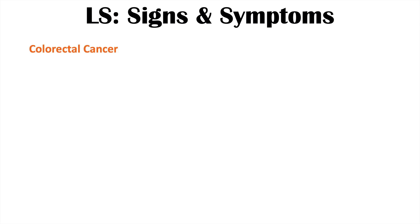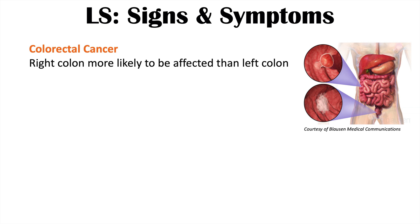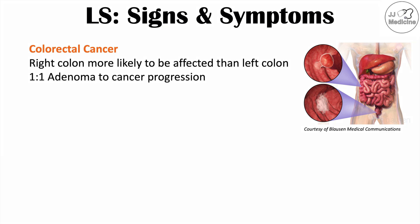The most common cancer in Lynch syndrome is colorectal cancer. The right colon is more likely to be affected than the left colon. There is also a high degree of progression from adenomas to carcinomas — essentially a one-to-one ratio. This contrasts with sporadic colorectal cancer, where the ratio is 30 adenomas to one cancer, meaning there is a very high degree of cancer progression in Lynch syndrome.